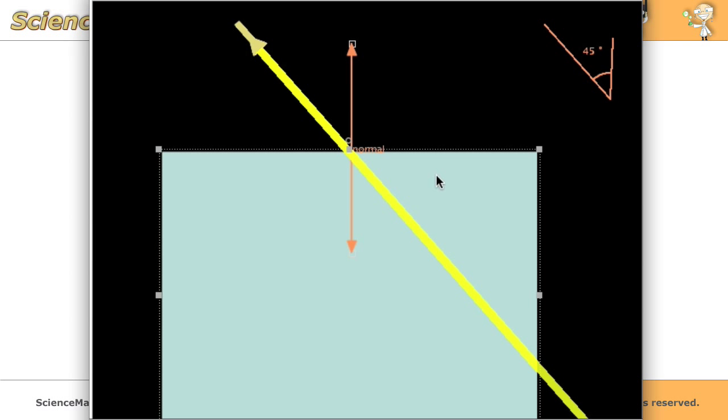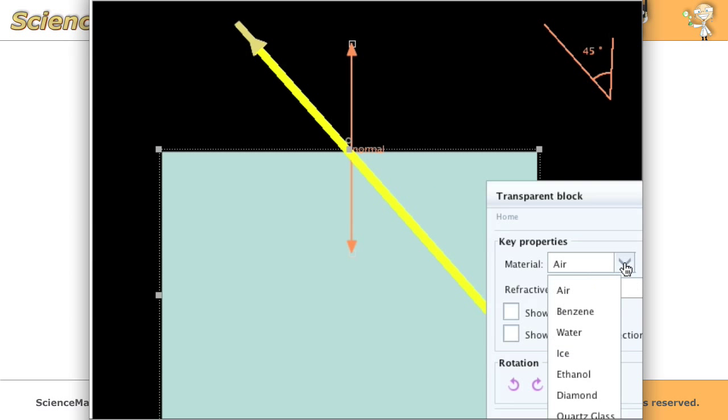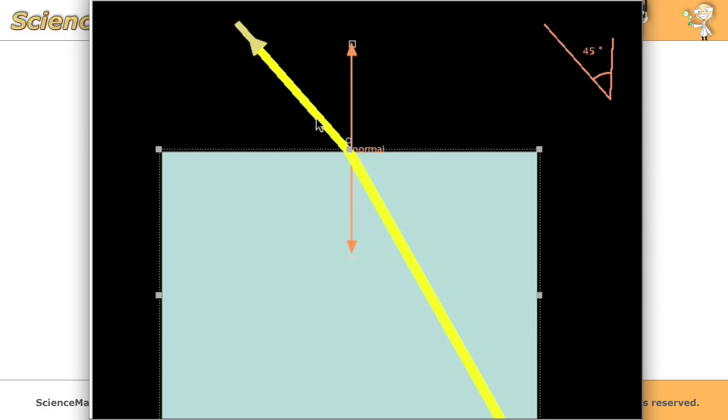But if we click on this block and change the substance to water, you can see that our light ray now bends. And that's because we have a density change in going from the dark area to the light blue area, from air to water. And the light ray bends towards normal.